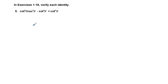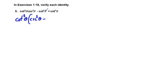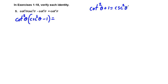Problem 5: cotangent squared theta times cosecant squared theta minus cotangent squared theta equals cotangent to the 4th power theta. Again, look for a common factor. Factoring out cotangent squared theta, we have cotangent squared theta times cosecant squared theta minus 1. Using the Pythagorean identity, cotangent squared theta plus 1 equals cosecant squared theta; subtracting 1 from both sides gives cotangent squared theta equals cosecant squared theta minus 1.